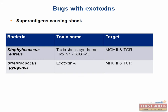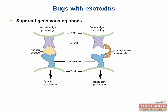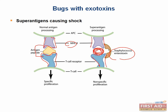Staph aureus produces a superantigen known as toxic shock syndrome toxin 1, resulting in toxic shock. Strep pyogenes can also produce a superantigen known as exotoxin A. Superantigens are particularly dangerous because they cause nonspecific interactions between MHC class II receptors and T cell receptors, causing nonspecific proliferation without a specific antigenic peptide in between.